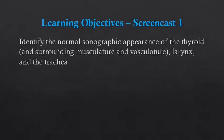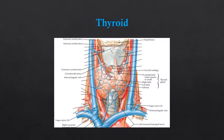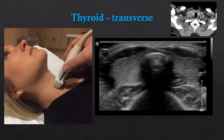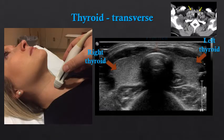For this screencast we will focus on identifying the normal sonographic appearance of the thyroid, larynx, and trachea. The thyroid is a complex structure. It sits right in the midline of the neck between the two carotid sheaths overlying the trachea. When imaging the thyroid with ultrasound we often start with a transverse view in midline. We can see the right thyroid, the left thyroid, and in the middle the trachea. Notice the trachea has a thin echogenic line with posterior shadowing — this is due to gas filling the trachea.